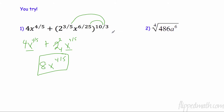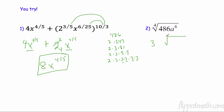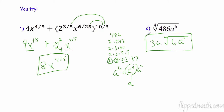Now the fourth root of 486x to the eighth. Let's break 486 down: 2 times 243, and 243 is 3 to the fifth. So I have 2 times 3 to the fifth. I need four of the same — one, two, three, four — so I take a 3 out, and one 3 and the 2 remain inside: that's 6 inside. For x to the eighth: eight divided by four — I have two complete groups, so I take x squared out, and nothing of x remains inside. So the answer is 3x squared times the fourth root of 6.